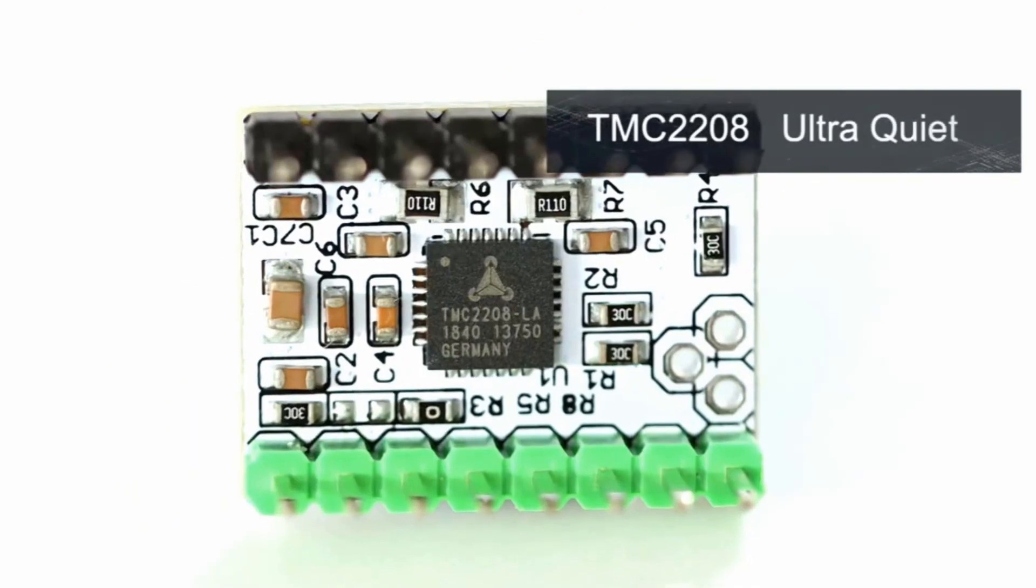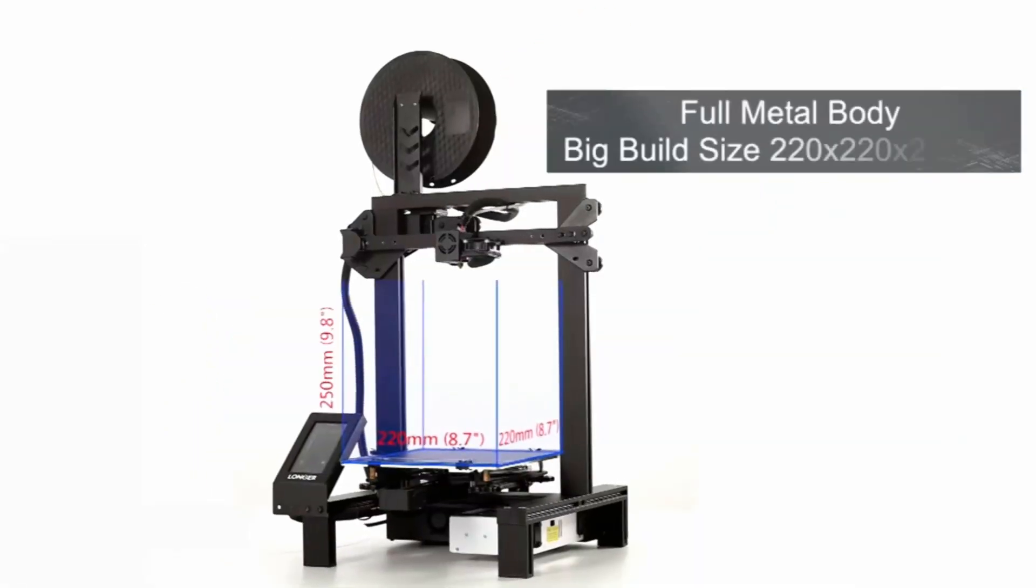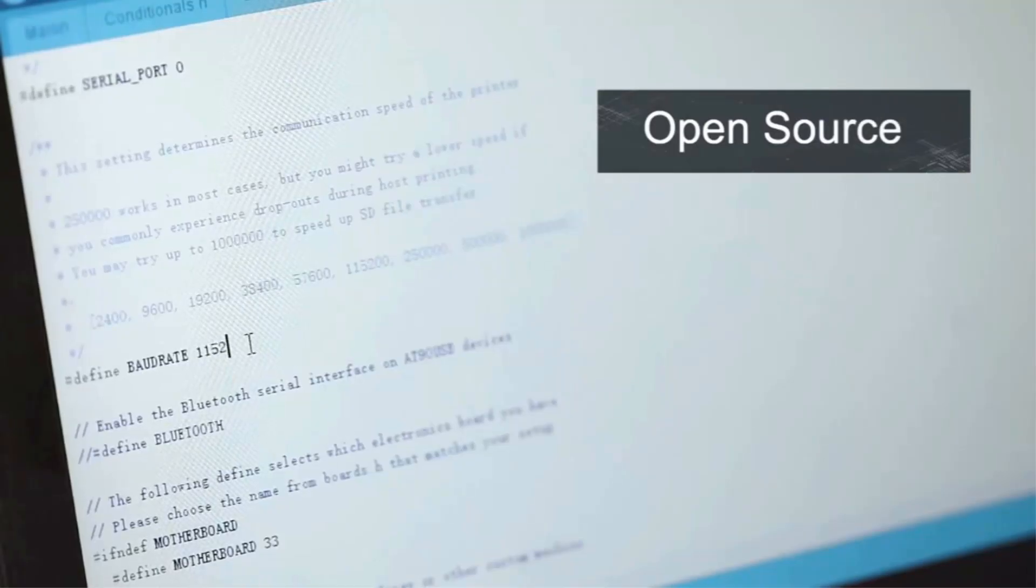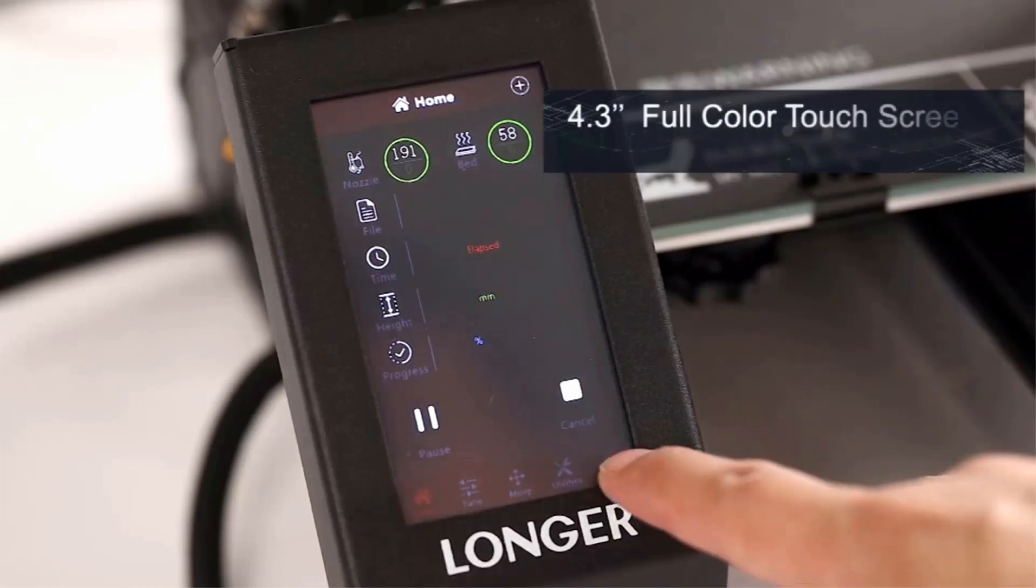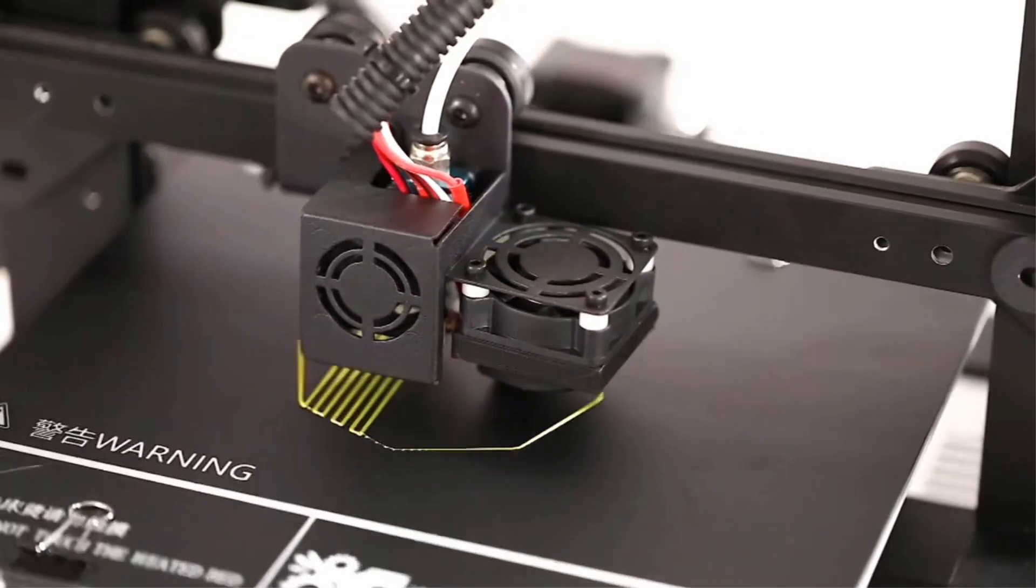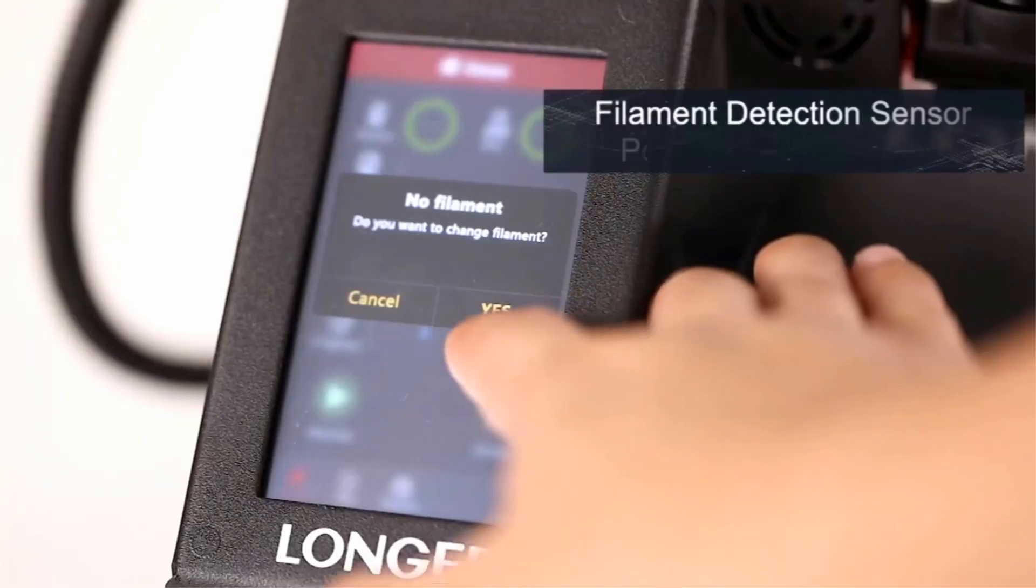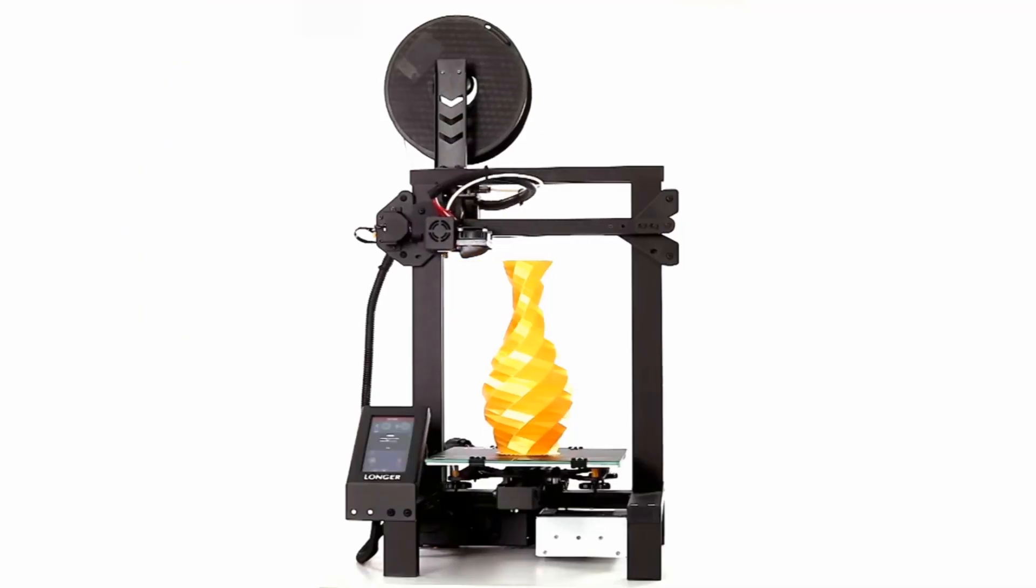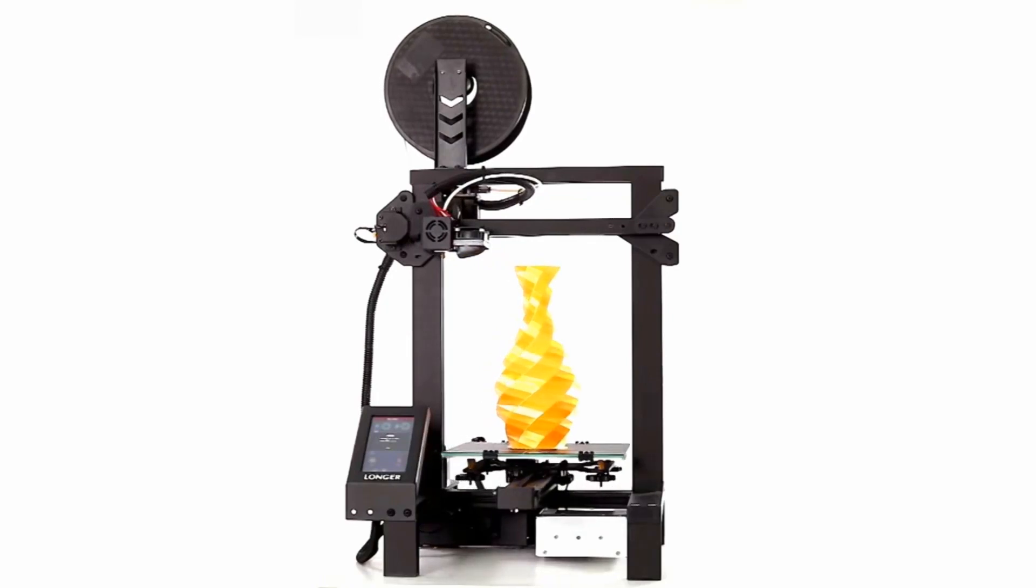LK4 Pro by Longer has the feature of resuming and recovering printing after a power outage. It can also pause the printing when the filament runs out. This 3D printer is integrated with plug and play ultra quiet drive modules which makes printing noise free and gives you a more healthy environment while printing.